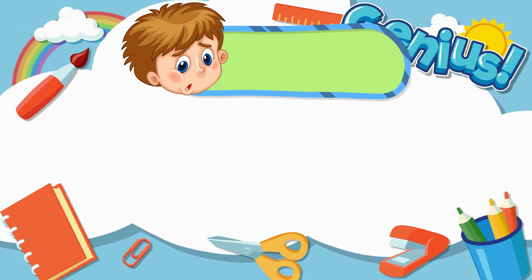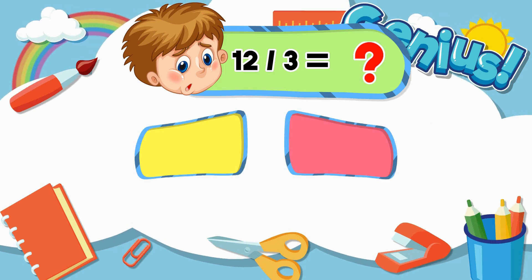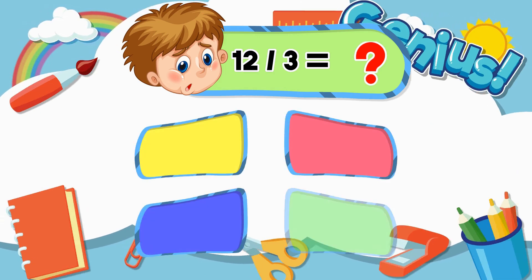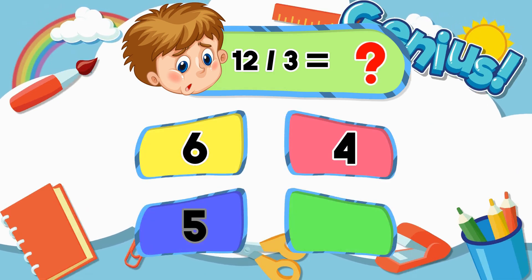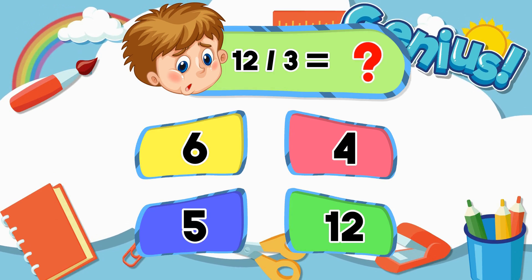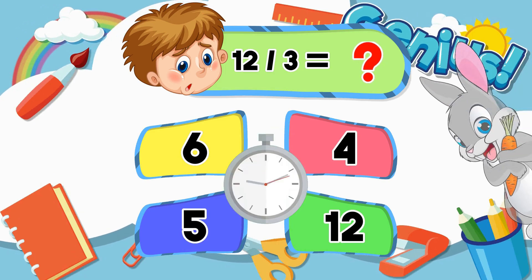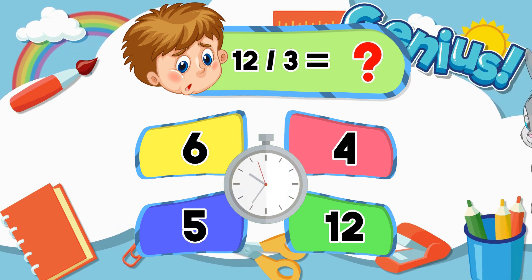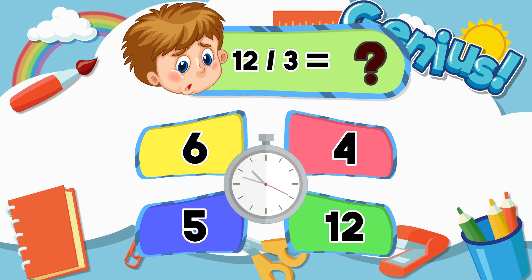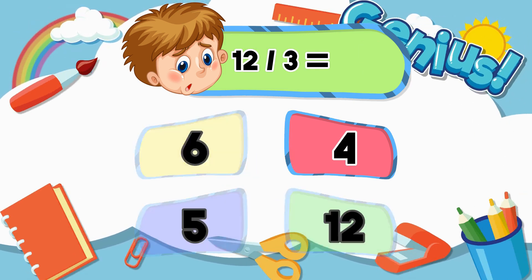What is 12 divided by 3? 6, 4, 5, 12. 4.